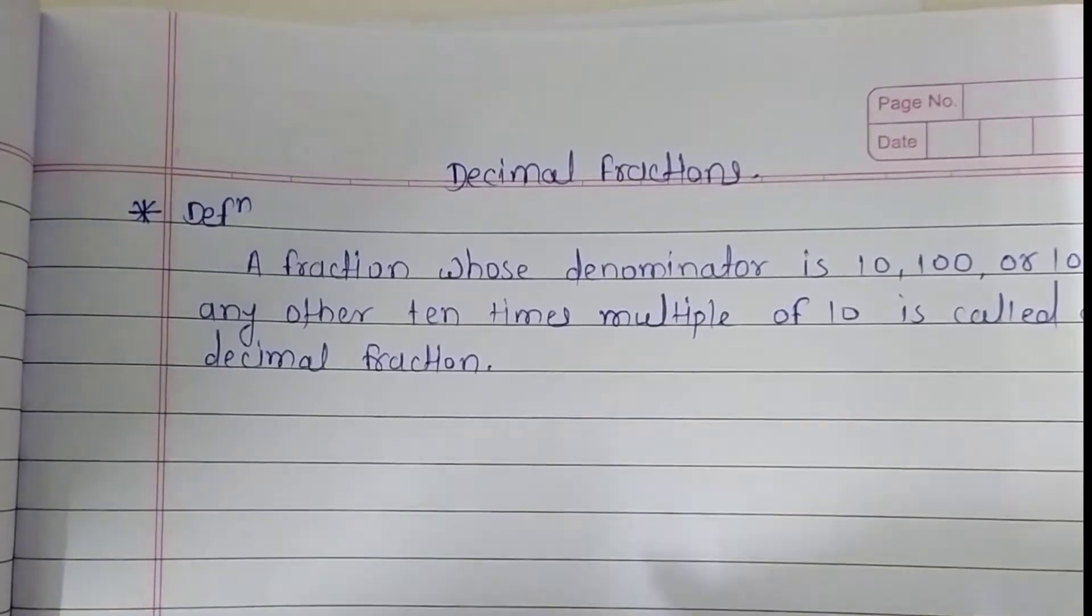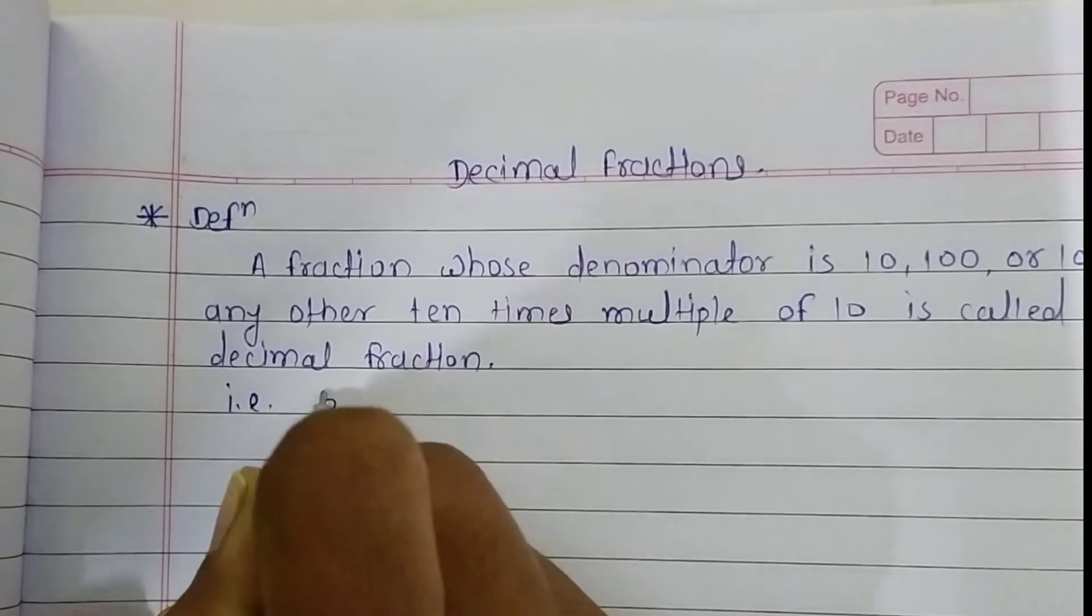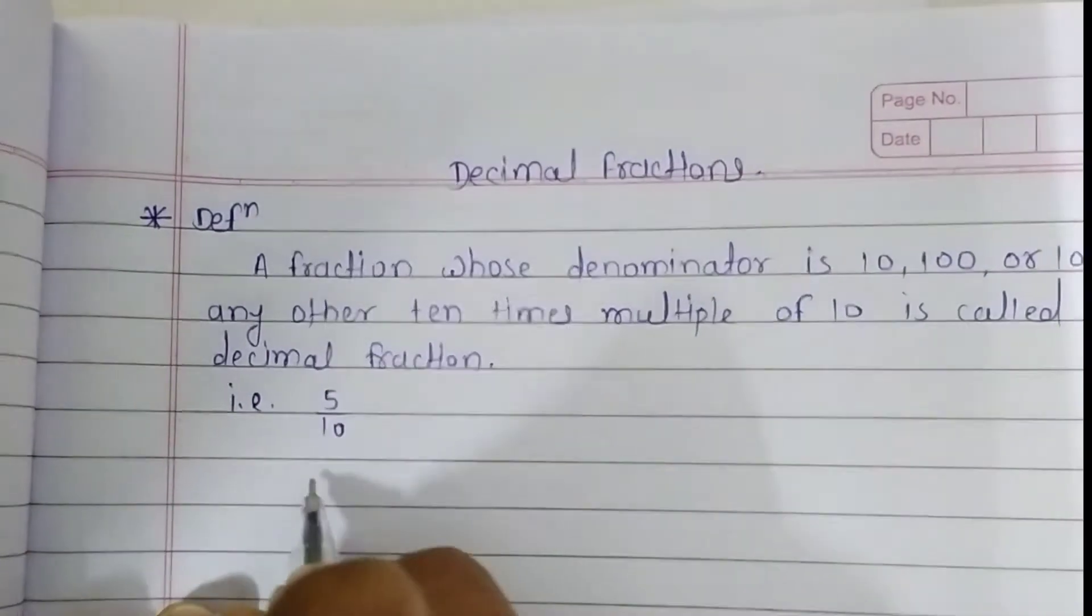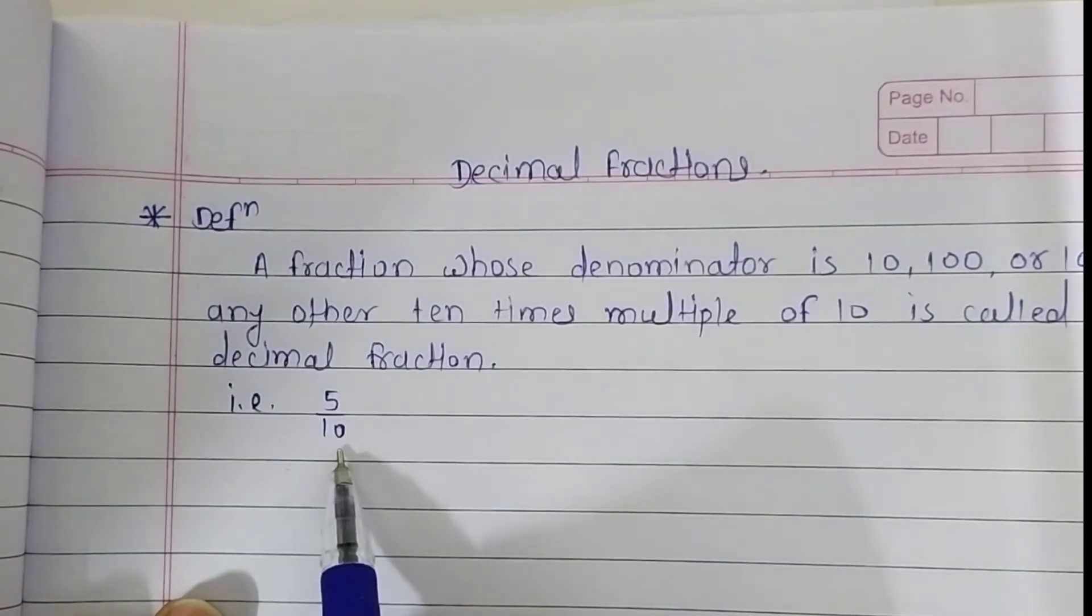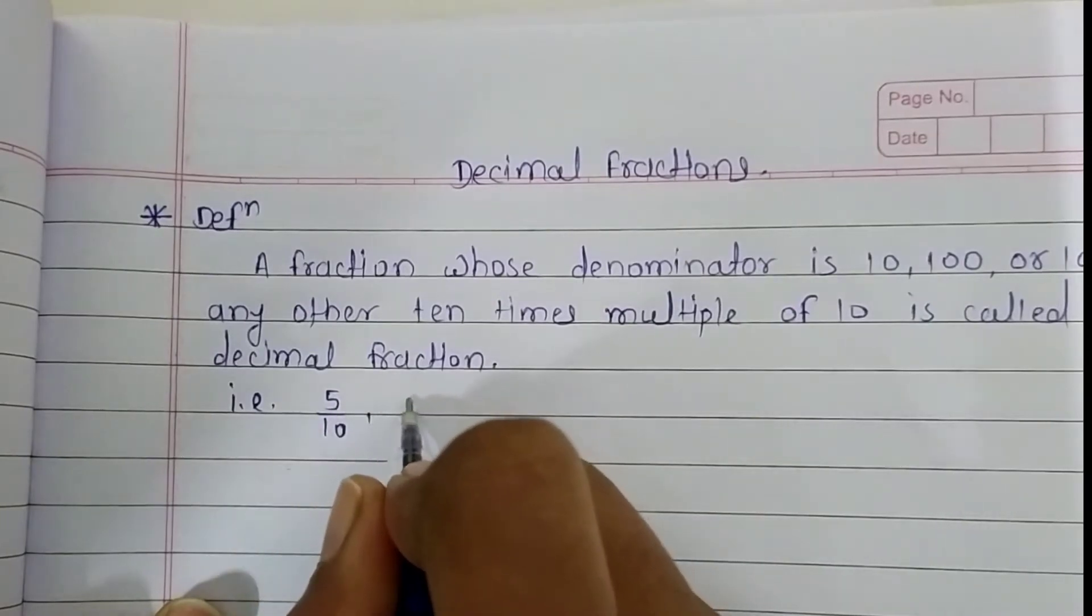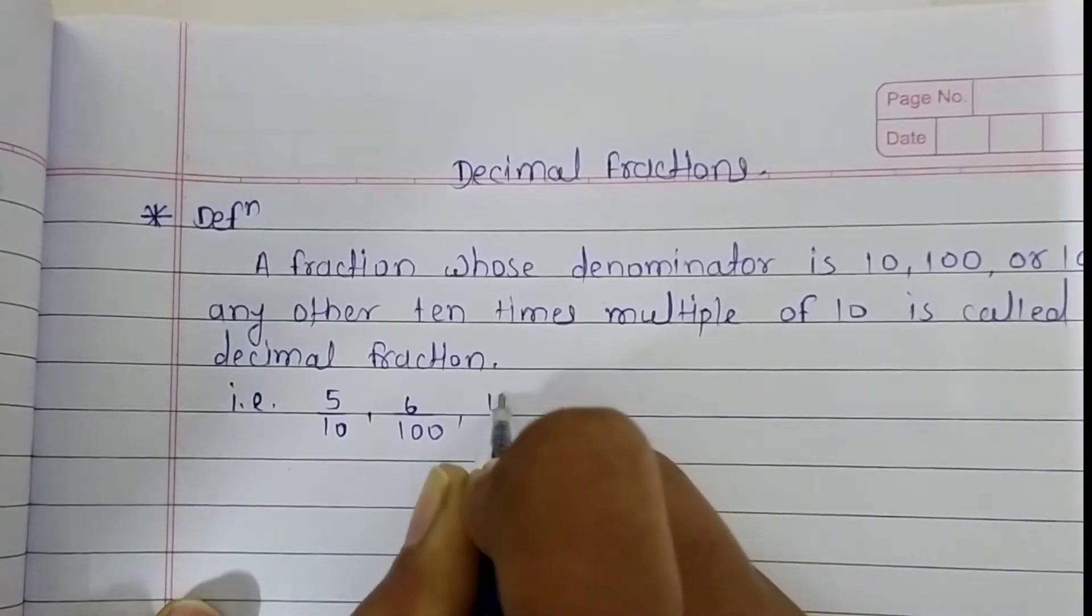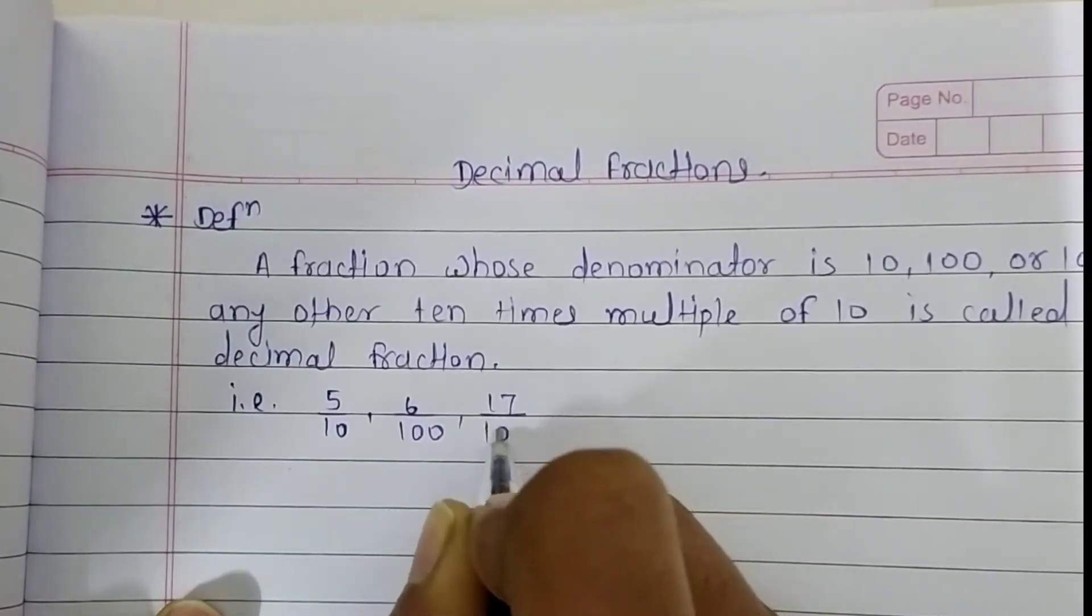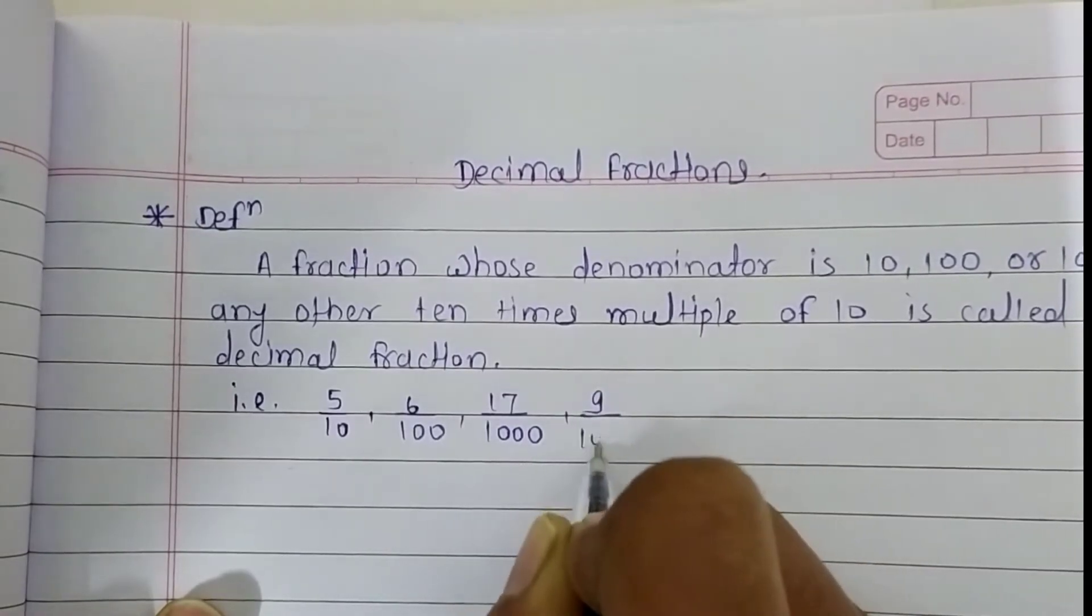For example, 5 upon 10. In this fraction, the denominator is 10, so we can say that this is a decimal fraction. Or 6 upon 100, 17 upon 1000, 9 upon 10,000.